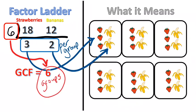So factor ladders are very handy. They can tell you what the greatest common factor is and they can tell you how many is in each group if you made that many number of groups.